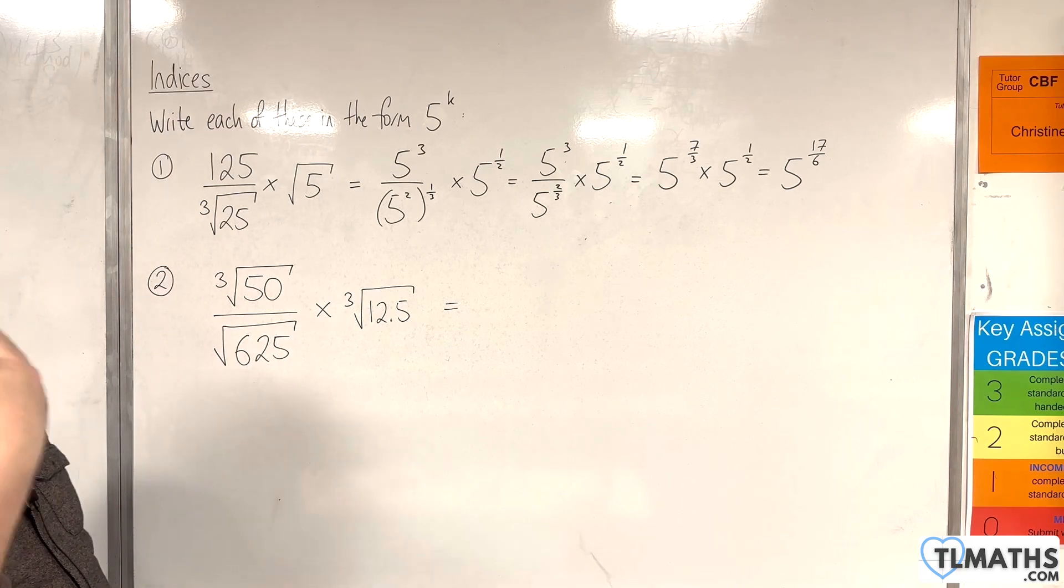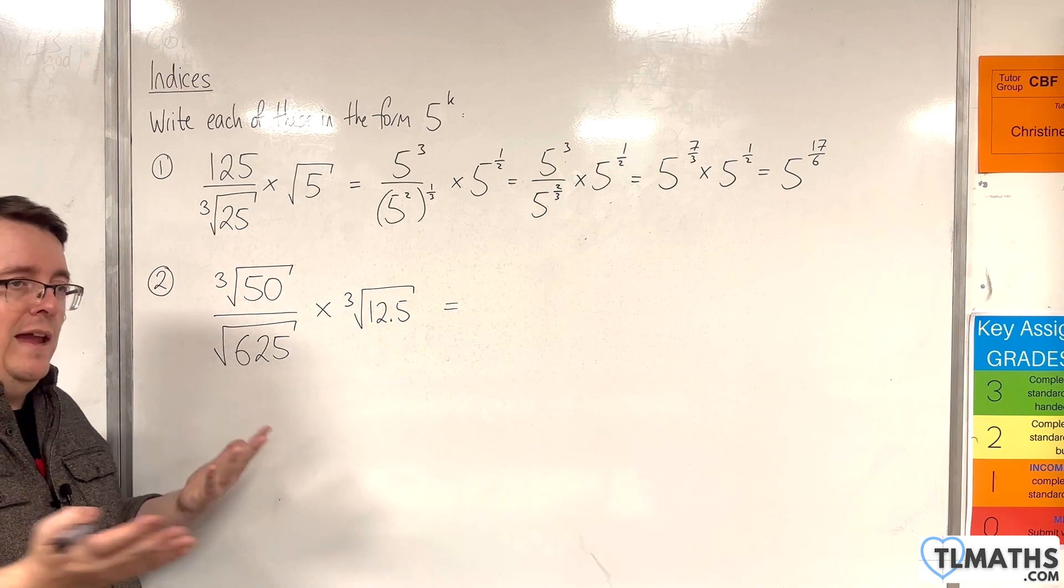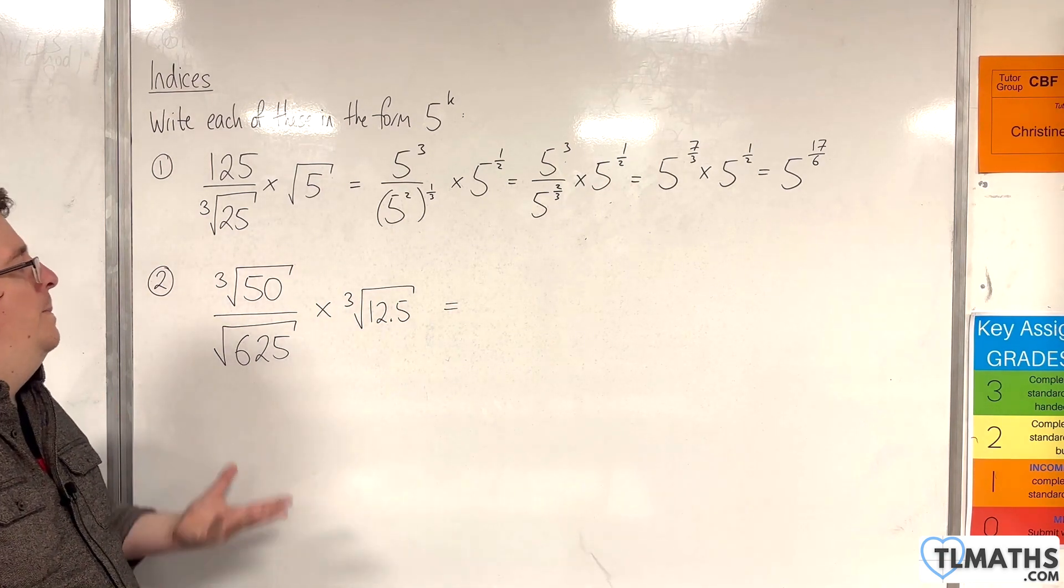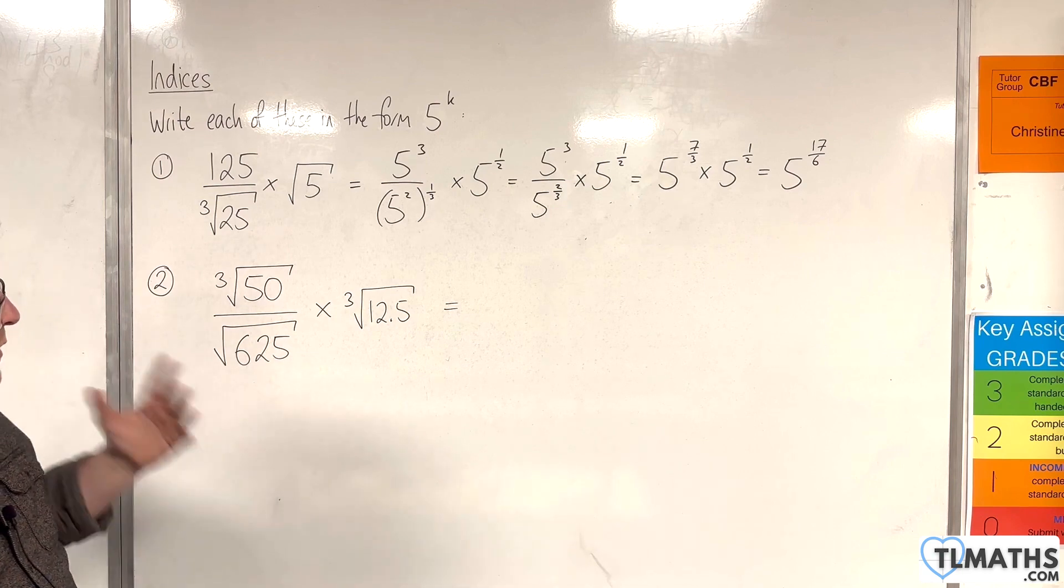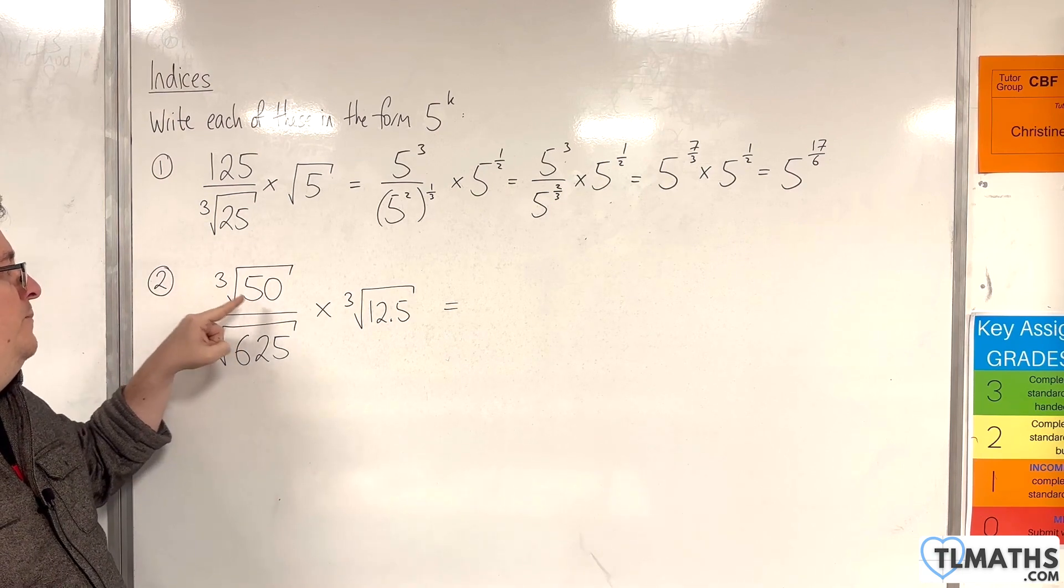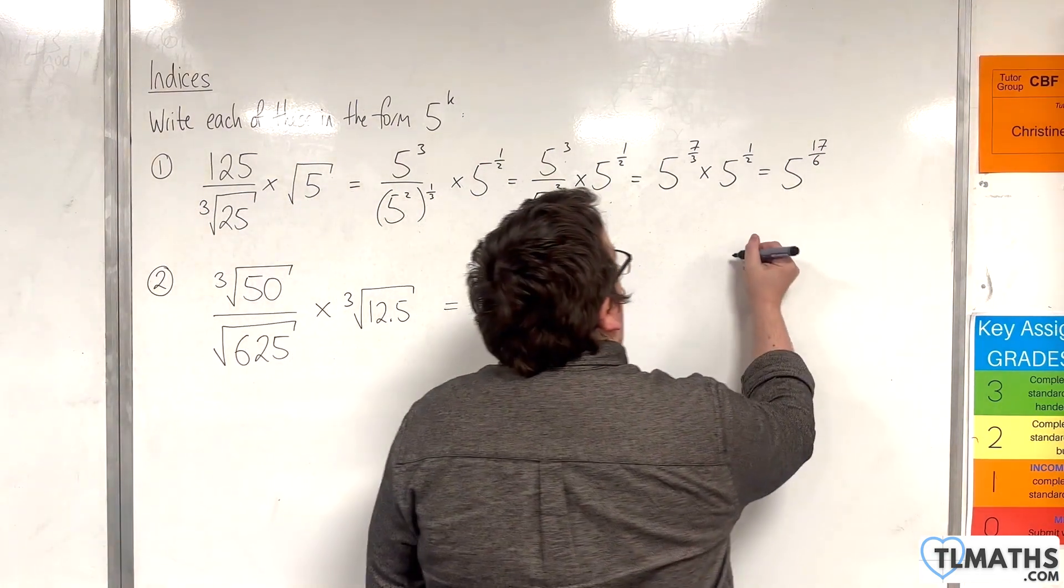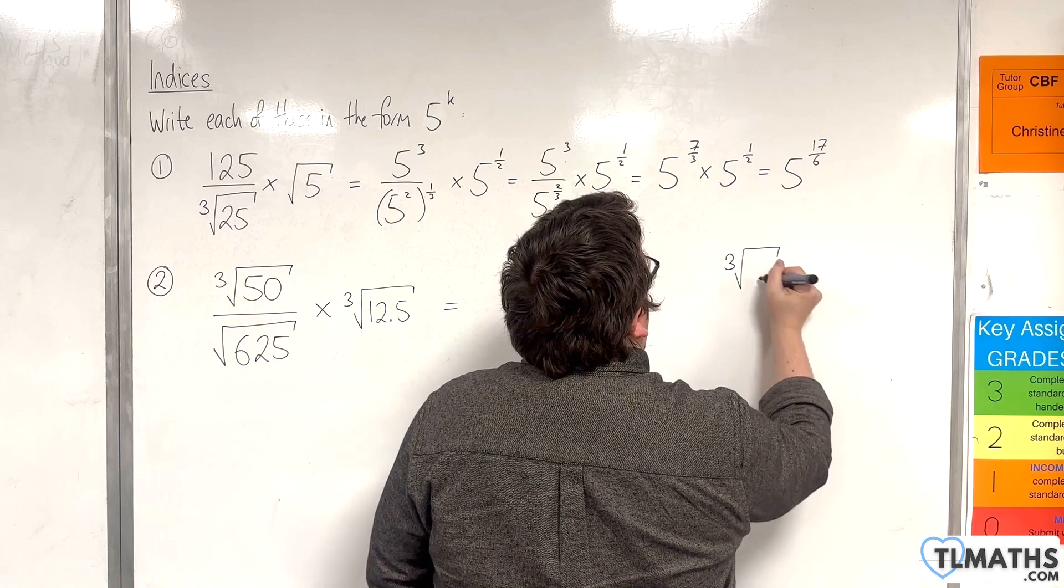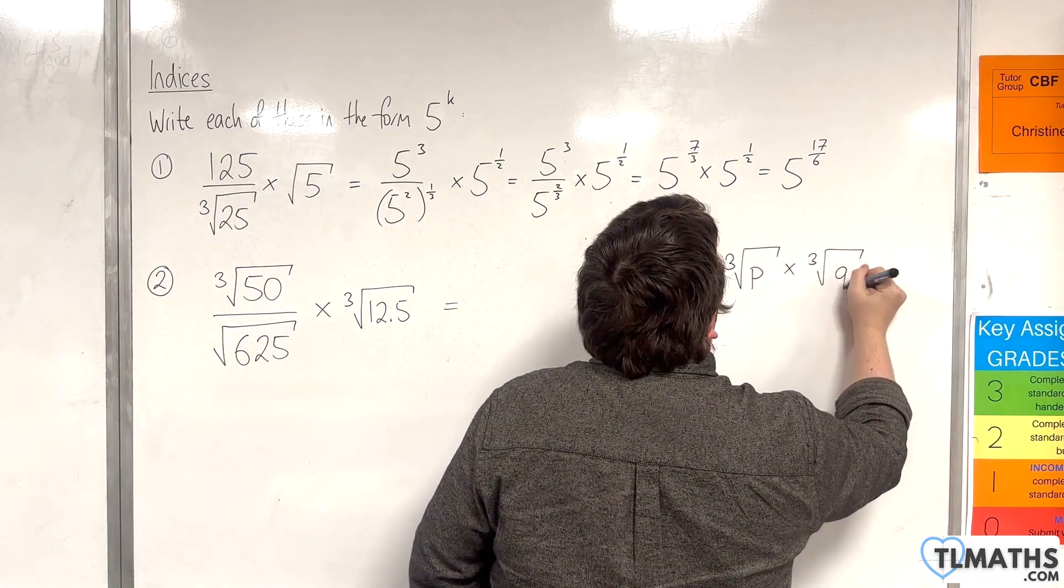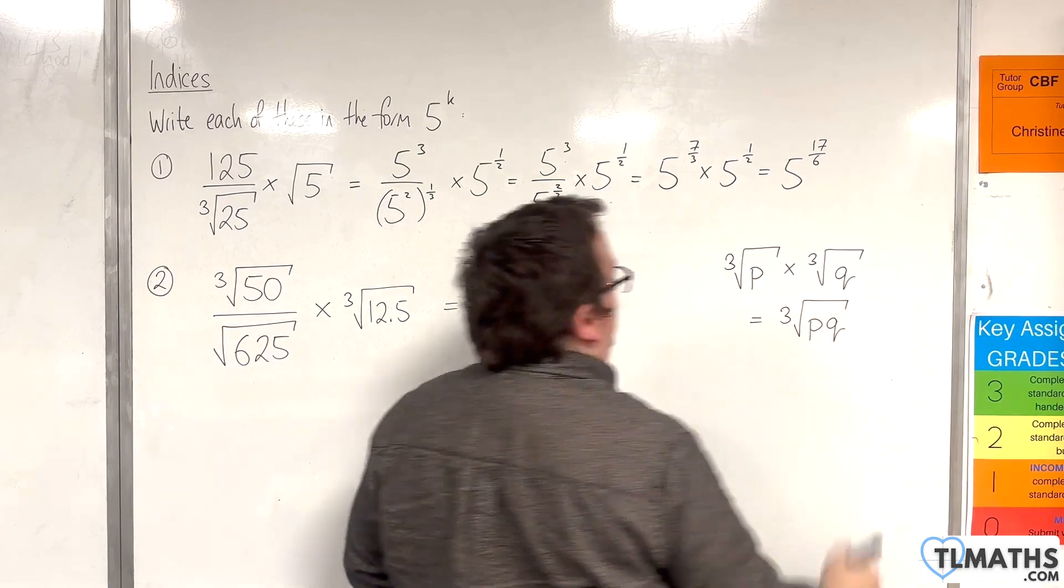So let's just for the moment think, okay well, I can't write it as 5 to the power of k, and I can't write 12.5 as 5 to the power of k either. So what could I do? Well one thing that you can do is the fact that you've got the cube root of something times the cube root of something else. So if I write the cube root of p and I want to multiply that by the cube root of q, then that is the same as the cube root of p times q.